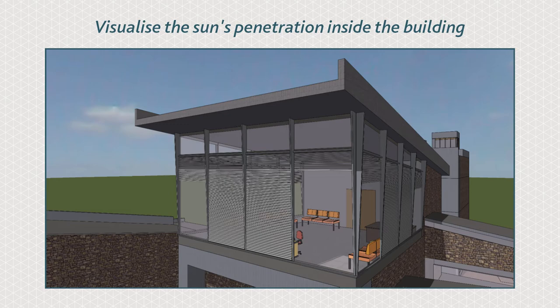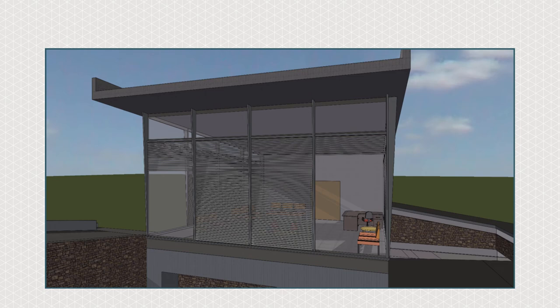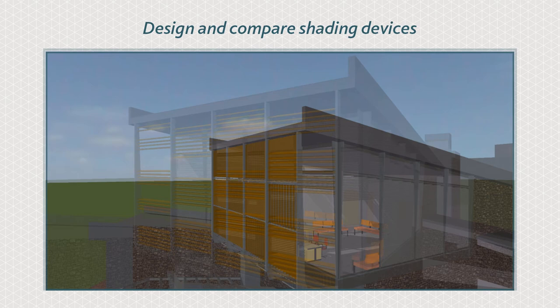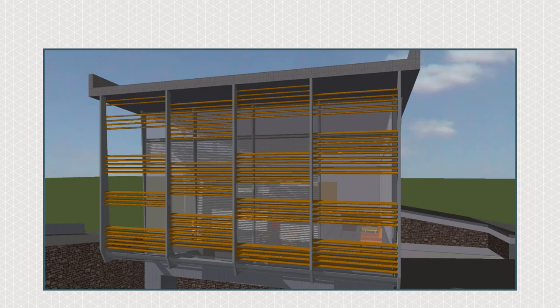Carefully sized and positioned glazing and shading devices reduce the need for artificial lighting. Track solar penetration and analyze internal and external shading devices to minimize or maximize the effect of solar gains.